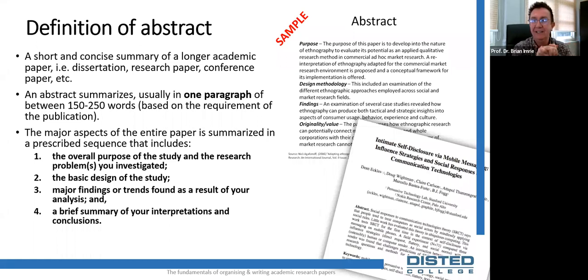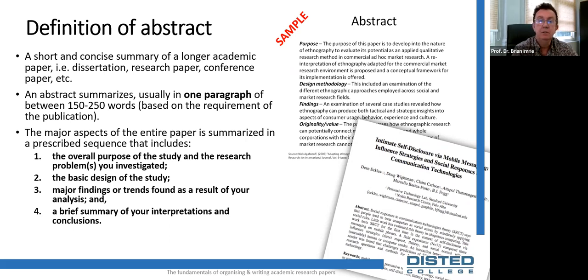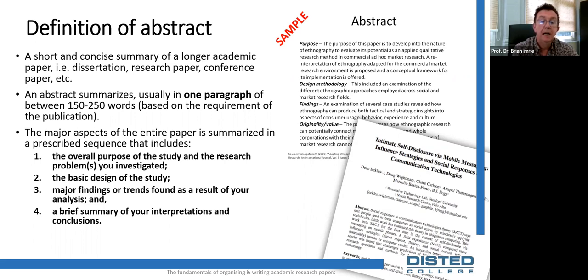The type of publication outlet will determine your choice of abstract type, and the type of abstract will determine its scope and length. Usually abstracts are in the range of 150 to 250 words. They cover the overall purpose of the study, the basic research design, often the major findings, and a brief summary of interpretations and conclusions.